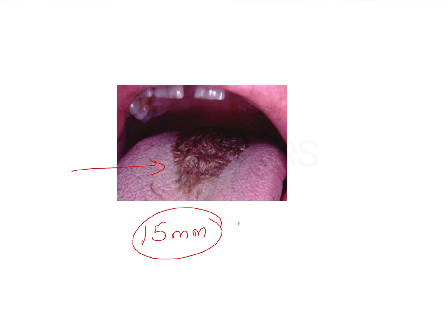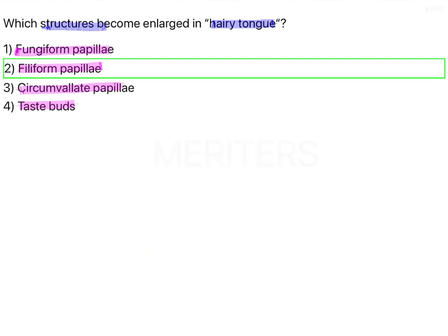The etiological concern with hairy tongue is hypertrophy of filiform papillae. Other names to remember: lingua villosa, lingua nigra, lingua villosa nigra, and black hairy tongue. So the correct answer is option 2 — filiform papillae.